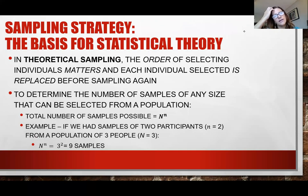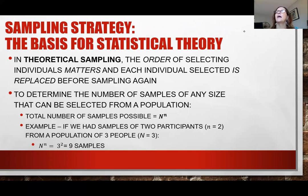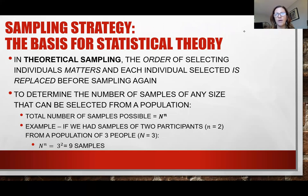Sampling with replacement is called theoretical sampling. If we're replacing each time, the probabilities stay the same. Sometimes we want to know how many samples of a certain sample size we would obtain from a certain population size. Here's how we come up with the total number of samples possible depending on what we're looking at.